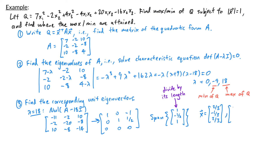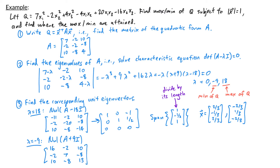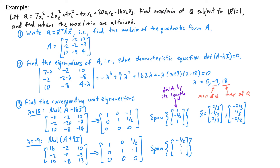Now to find where the minimum occurs, I need the eigenvectors for λ = −9. I look at the null space of A plus 9I, which is the matrix (16, −2, 10; −2, 7, −8; 10, −8, 13). Row reducing gives (1, 0, 1/2; 0, 1, −1; 0, 0, 0). So the eigenspace is the span of the vector (−1/2, 1, 1). Finding the unit eigenvector by dividing by its length, the input vectors x where the minimum is attained are plus or minus (−1/3, 2/3, 2/3).